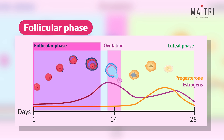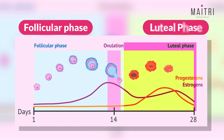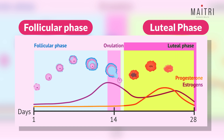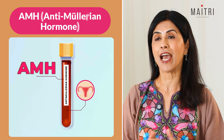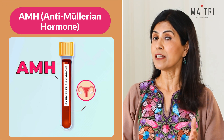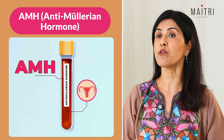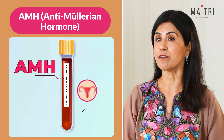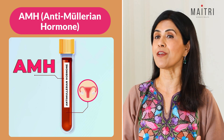Follicular phase: the first half of your menstrual cycle, when follicles in the ovary grow and one of them finally becomes dominant to release the egg. Luteal phase: the time after ovulation when the uterus prepares for implantation. AMH, anti-Müllerian hormone: this hormone tells us about your ovarian reserve — the number and quality of eggs.